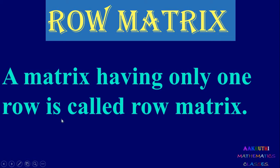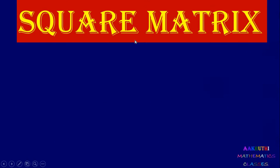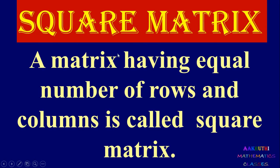Next, row matrix: a matrix having only one row is called a row matrix. Consider example A equal to [2, -6, 1, 5]. Here the order is 1 by 4 — only one row and four columns. Since number of rows is only one, this matrix is called a row matrix.